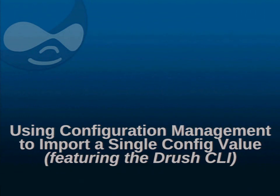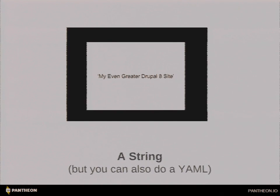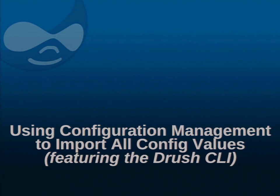Way three: you can use Drush for all of these operations. Configuration management has a bunch of Drush commands. Config-get is pretty obvious — you can specify system.site and the name value, and Drush will kick out that specific value. You can take that string, go to your live site, and do config-set to set those values. You have the ability using Drush to take a single value, get it from one environment, and set it to the other.